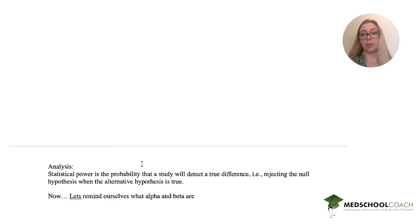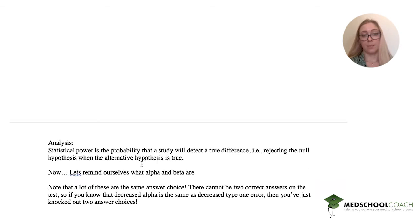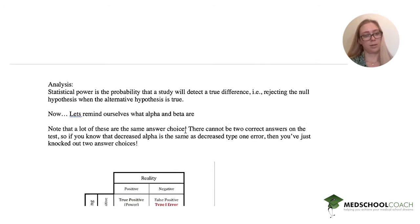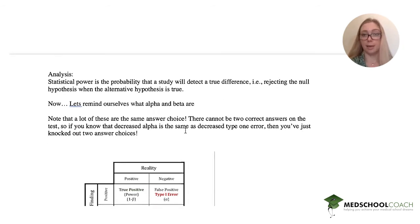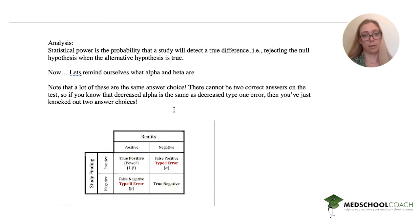Now it's important to remind yourself what is alpha and beta. A lot of these are the same answer choice and because there cannot be two correct answer choices on a test, if you know that decreased alpha is the same as decreased type 1 error, then you've just knocked out two answer choices.